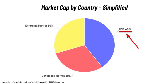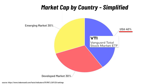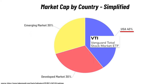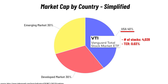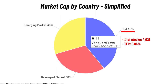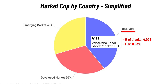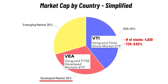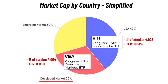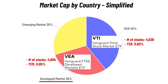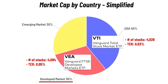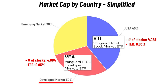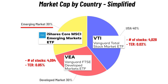One option for a US ETF would be Vanguard's Total Stock Market ETF, ticker symbol VTI. It invests in over 4,000 US companies — not just the 500 companies of the S&P 500 — with a total expense ratio of 0.03%, one of the cheapest ETFs globally. One option for a developed markets ETF would be Vanguard's FTSE Developed Markets ETF, ticker symbol VEA. It invests in more than 4,000 companies from 24 developed countries, excluding the US, with an expense ratio of 0.05%.